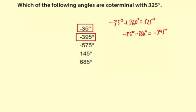And so basically if you take 325 degrees, subtract 360, you get negative 35 degrees. Then if you subtract another 360 degrees, you get negative 395 degrees.